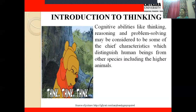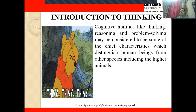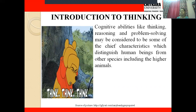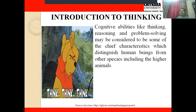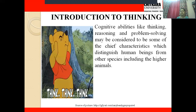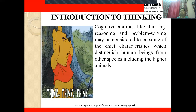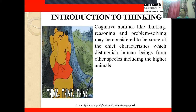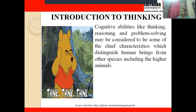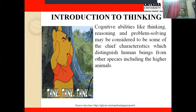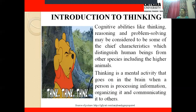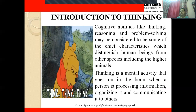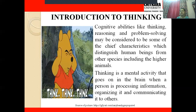In the introduction to thinking, cognitive abilities like thinking, reasoning, and problem solving may be considered some of the chief characteristics that distinguish human beings from other species, including higher animals. How a human being processes information or processes the thinking process in his mind is very efficient compared to other animals — how we think and how we perform in real life distinguishes us from other species.